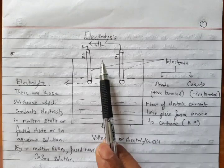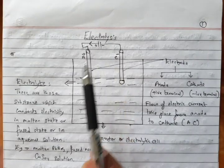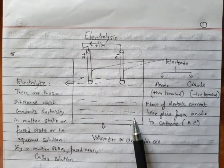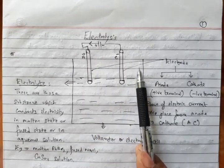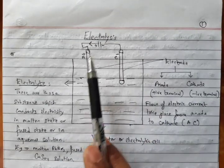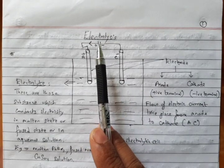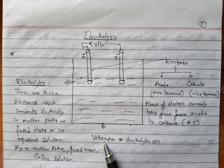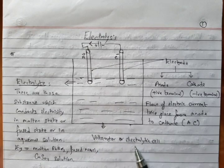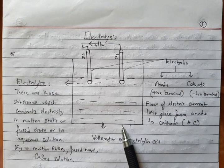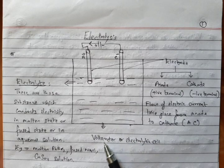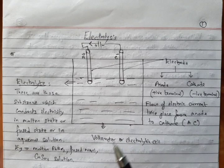The vessel in which we carry out the process of electrolysis — you can see the vessel out here — is called a voltmeter or electrolytic cell. So what is a voltmeter or electrolytic cell? It is an apparatus in which the process of electrolysis is carried out.